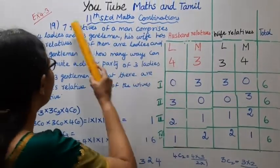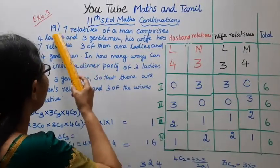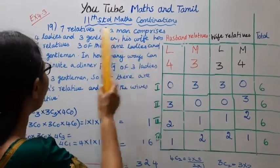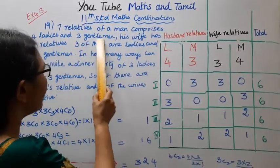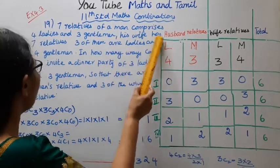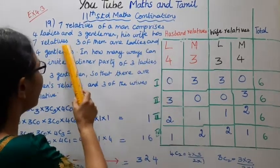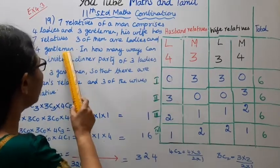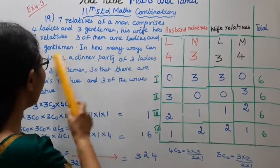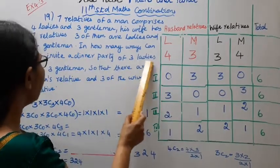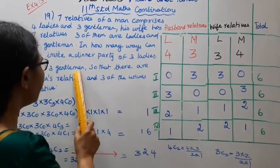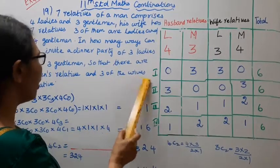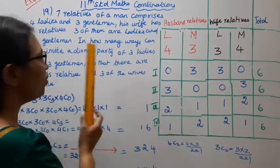11th Standard Max Combination Exercise 4.3, problem 19. 7 relatives of a man comprise 4 ladies and 3 gentlemen. His wife has 7 relatives, 3 of them are ladies and 4 gentlemen. In how many ways can they invite a dinner party of 3 ladies and 3 gentlemen, so that there are 3 men's relatives and 3 of the wives' relatives?